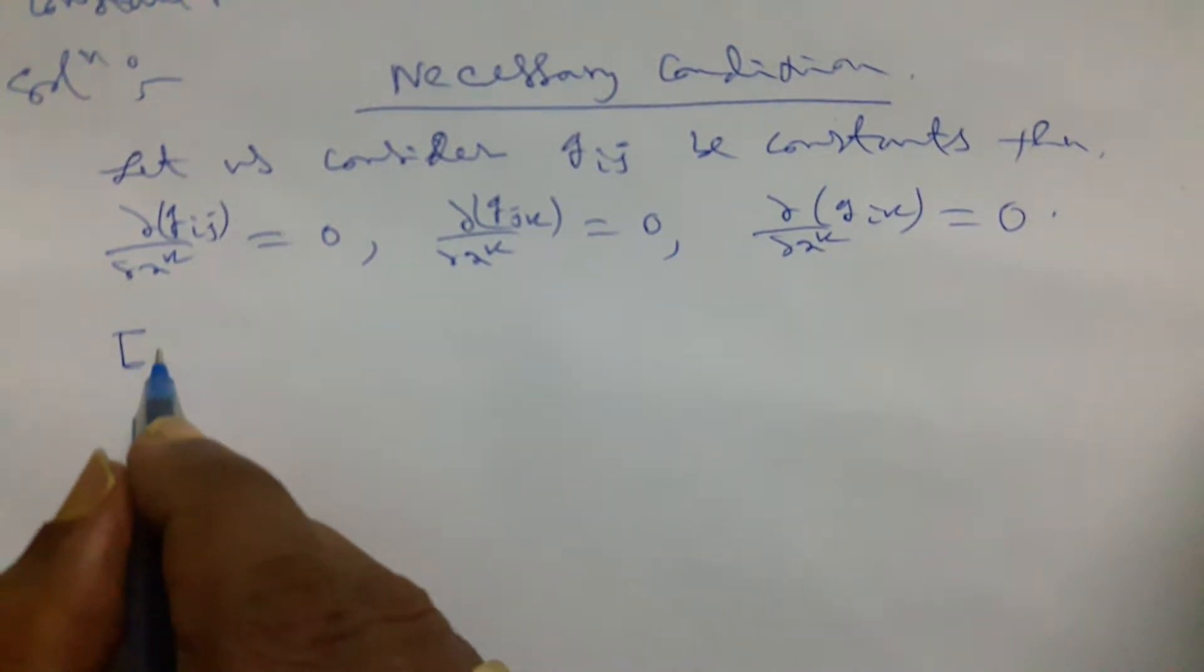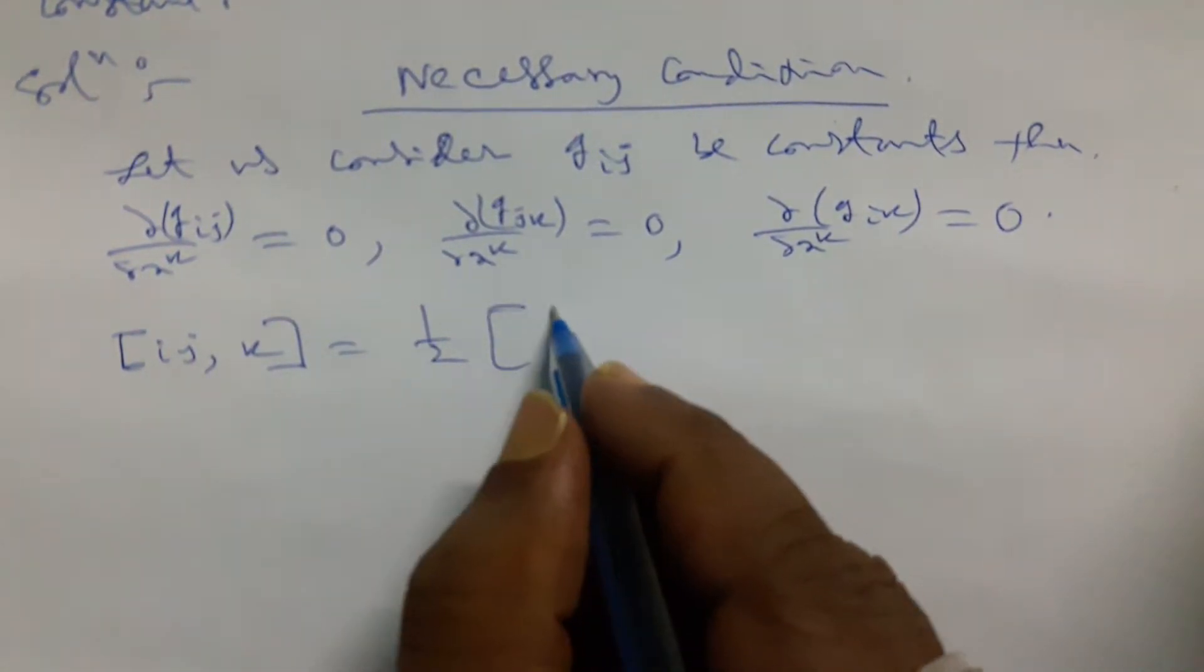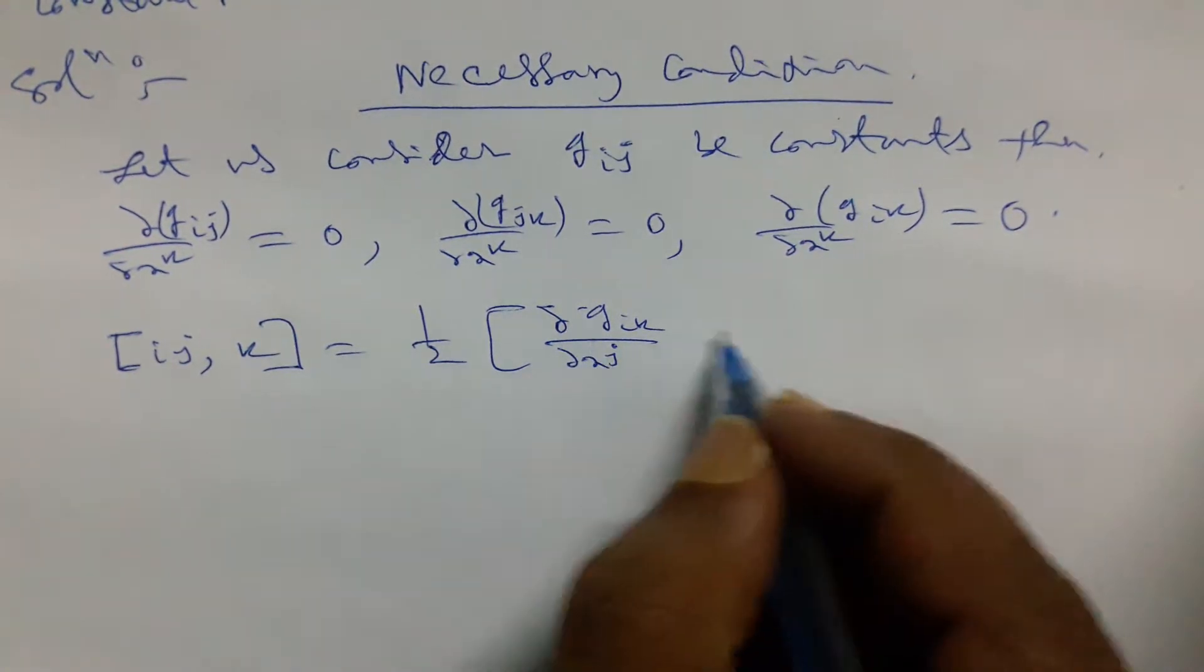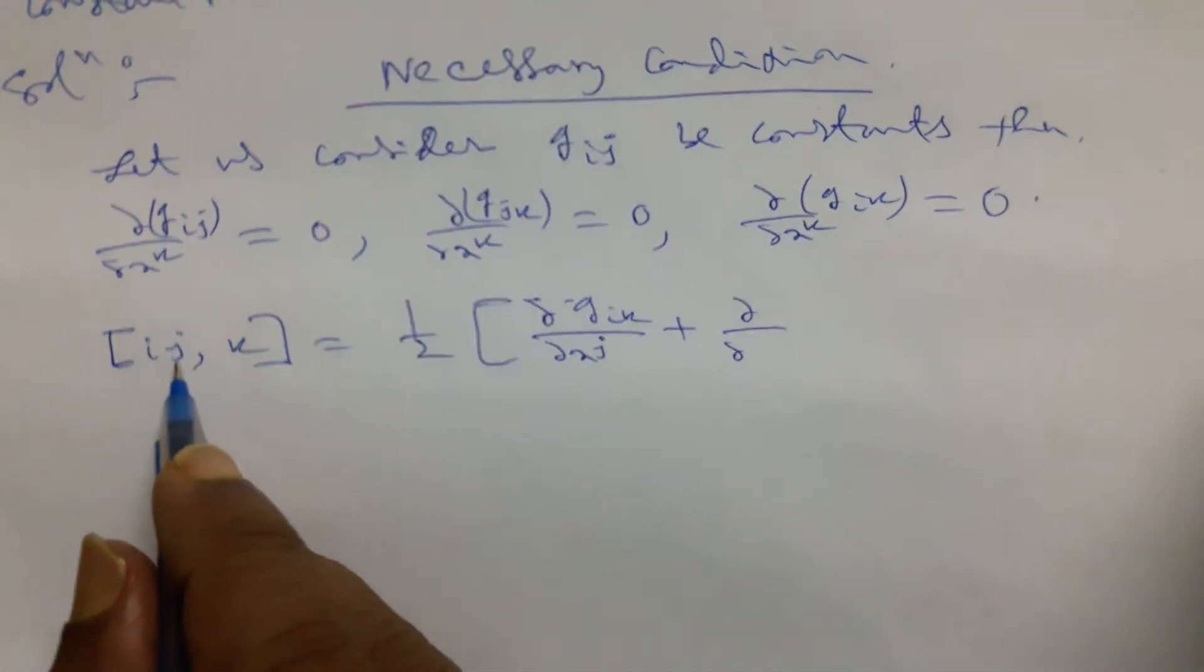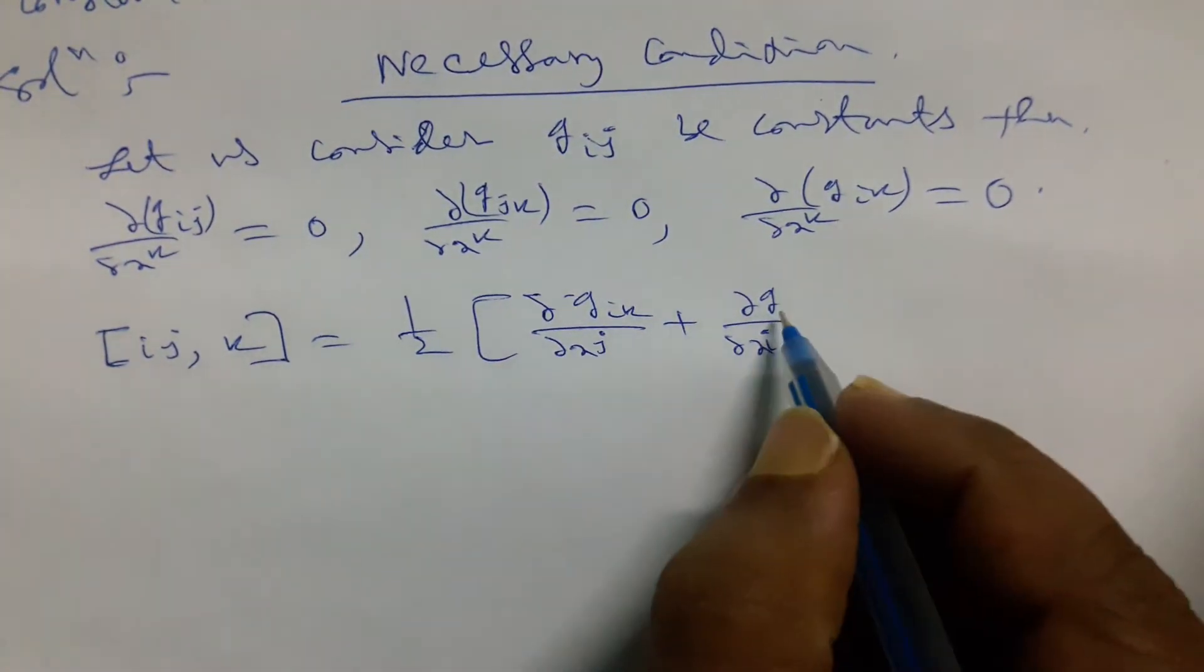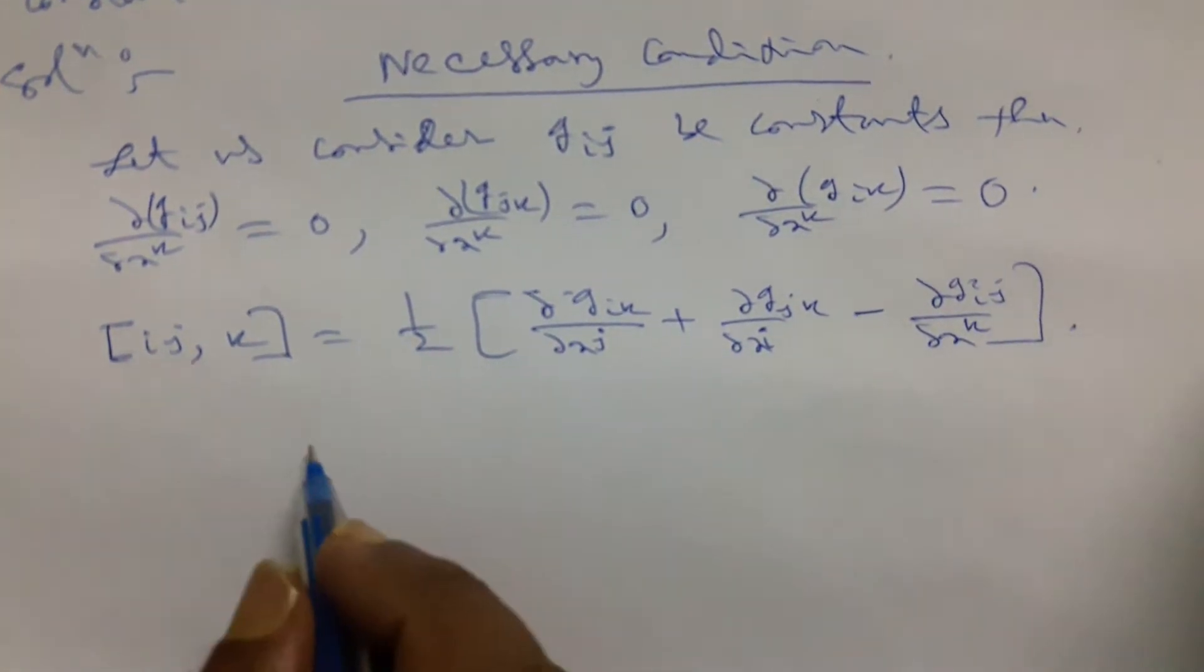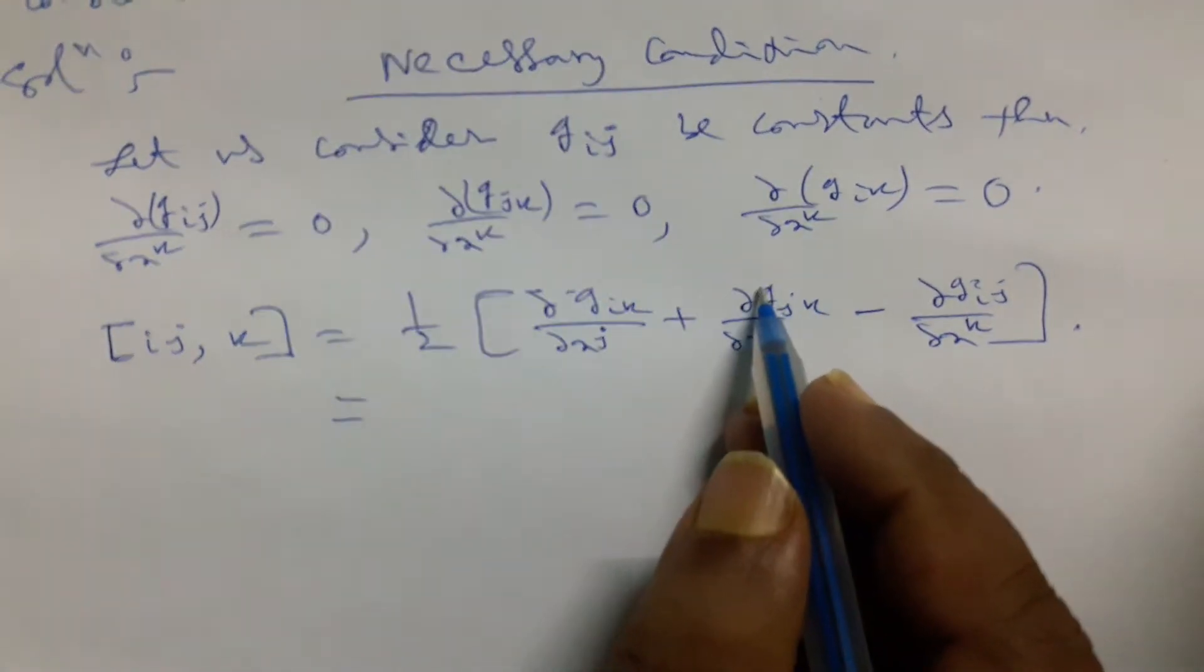Now, for Christoffel symbol of first kind [i,j,k], using the property: half of del/del xk of Gij plus del/del xj of Gik minus del/del xi of Gjk. Here we prove all the constant terms are zero, so the result will be zero.